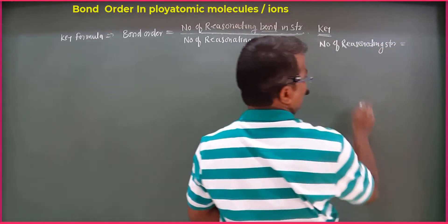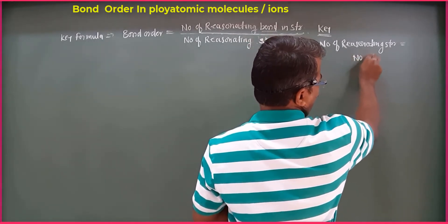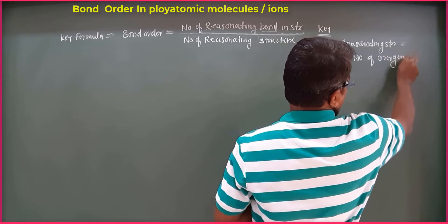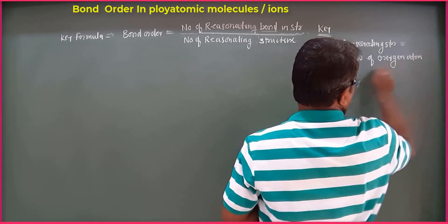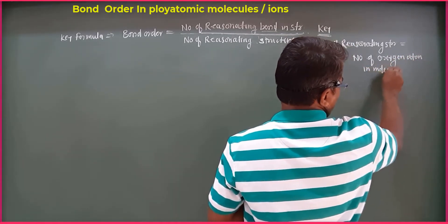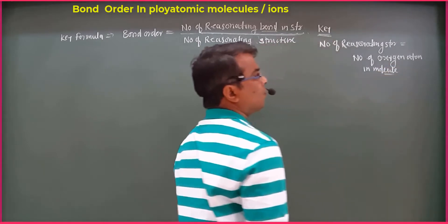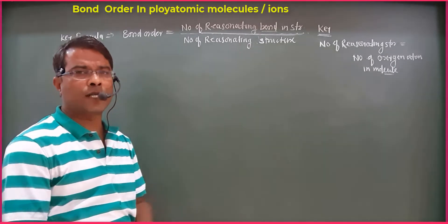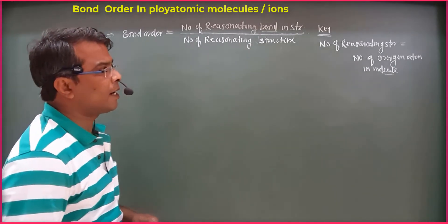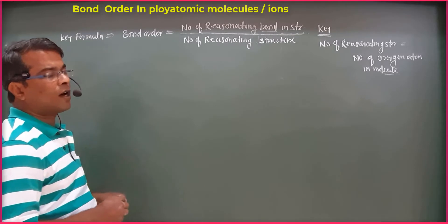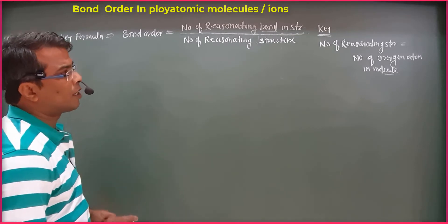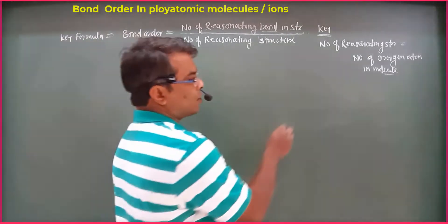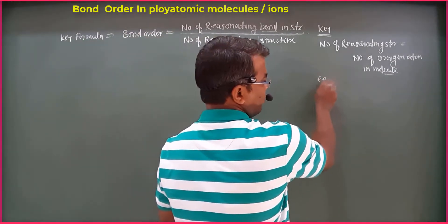The number of resonating structure is equal to the number of oxygen atoms in the molecule. We use this formula to calculate the bond order. If you use this formula to calculate the bond order using the number of resonating structures in polyatomic molecules.